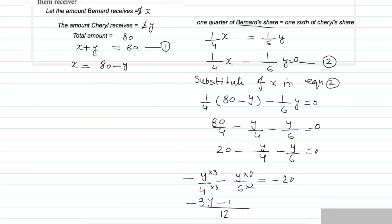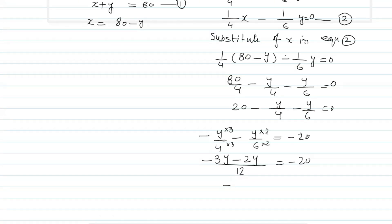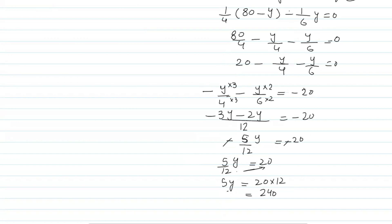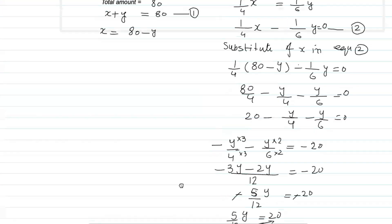This gives: 3y/12 + 2y/12 = 20, so (3y + 2y)/12 = 20, which is 5y/12 = 20. Shifting 12 to the right side: 5y = 20 × 12 = 240. Dividing both sides by 5: y = 240/5 = 48. So y = 48 dollars.